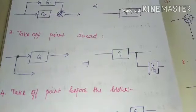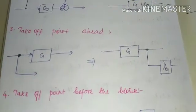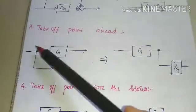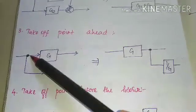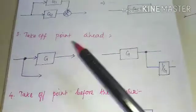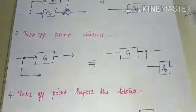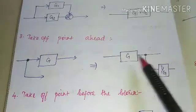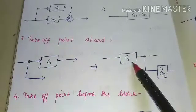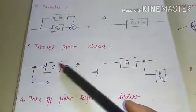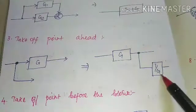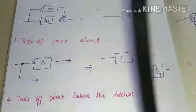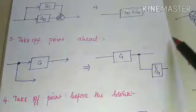The third rule is moving the takeoff point ahead — that is, after the block. The takeoff point is represented by the green point. While moving this takeoff point after the block, we have to divide by the gain of the block we are crossing. So, if the gain of that block is G, we divide: 1 by G. When moving the takeoff point after the block, divide the gain of that particular block — so, 1/G.